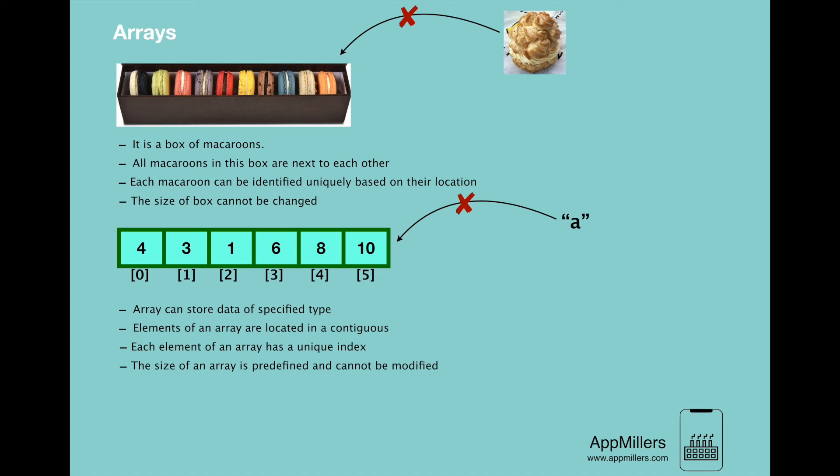So here again, if you look at this box of macarons, we see that the size of this box is predefined and this is applicable for array as well. When we create an array, we define its capacity. So we cannot change it later on. This is the biggest limitation on array.